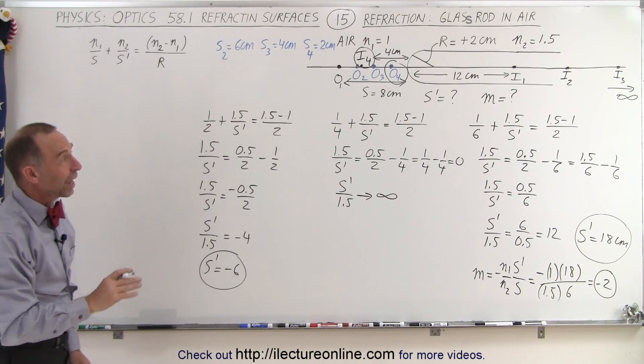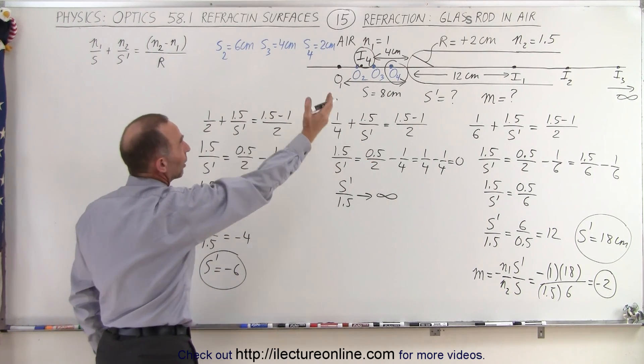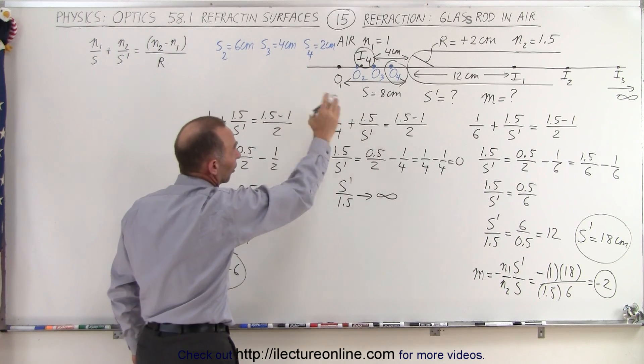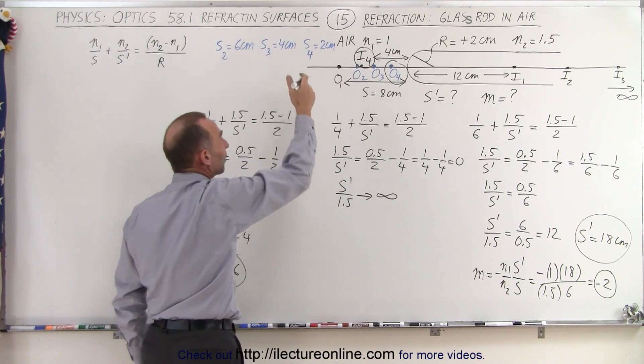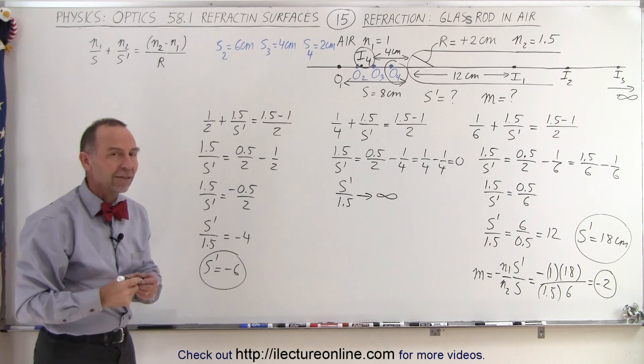So that's kind of interesting that we had an image on the right side of the boundary when the object was far away. As the object moved closer, all of a sudden the image flips and becomes on the same side as the object.